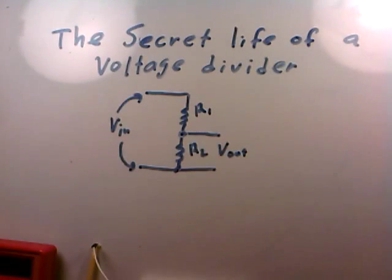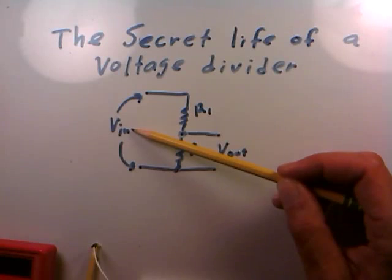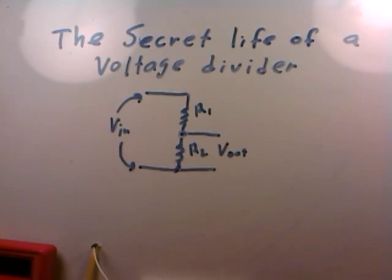The fraction depends on R1 and R2, so Vout is generally less than Vin. That's what voltage dividers do—they divide up an input voltage into an output voltage which is less.